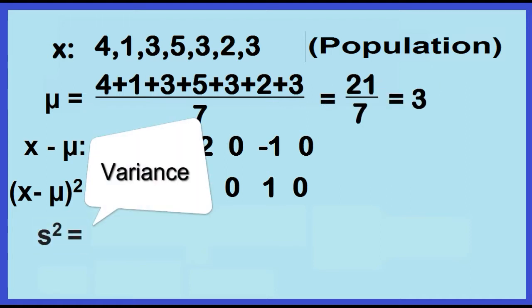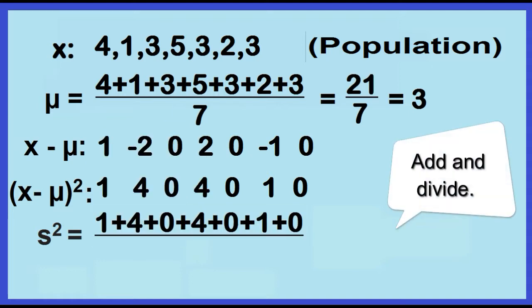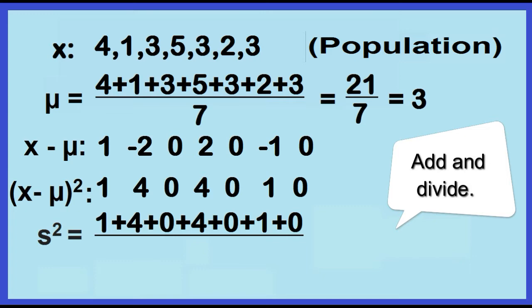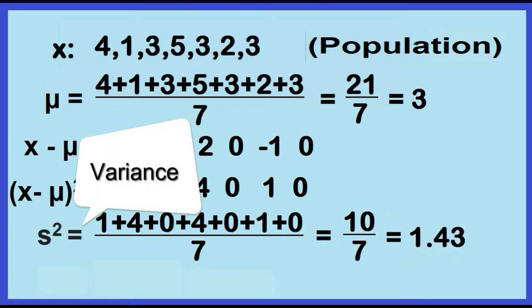Fourth, find the average of the squared deviations. 1 plus 4 plus 0 plus 4 plus 0 plus 1 plus 0, divided by 7. This is equal to 10 over 7, which is equal to 1.43.